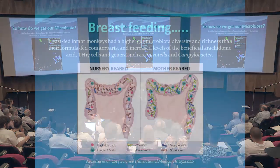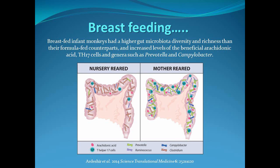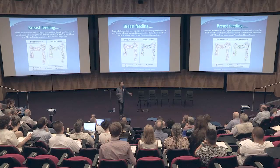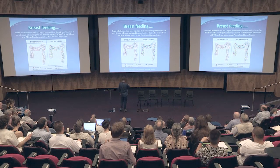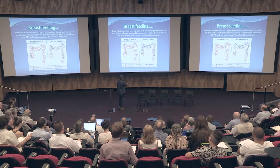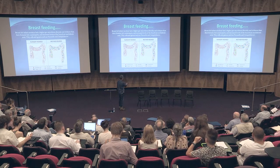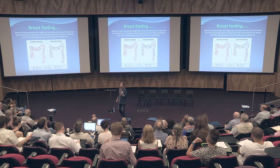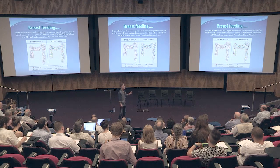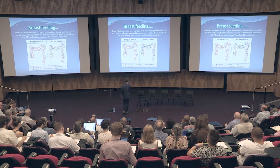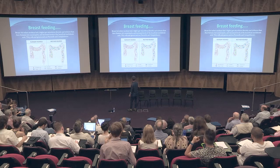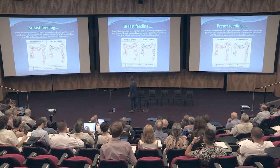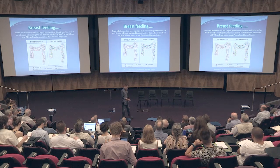Breastfeeding is another way we get microbiota. We can't do these experiments with humans, but studies in monkeys show that breastfed monkeys have much more diversity and a different kind of immune cells dominating the intestinal system. Whereas formula-fed monkeys have much more Clostridium and less helpful immune cells and compounds flowing through that system.